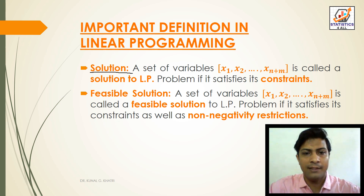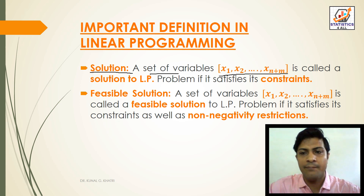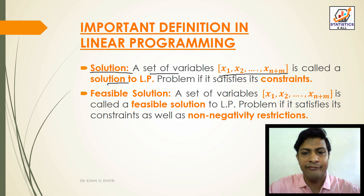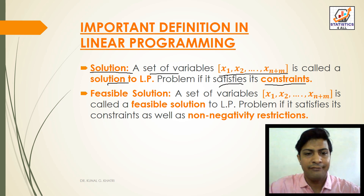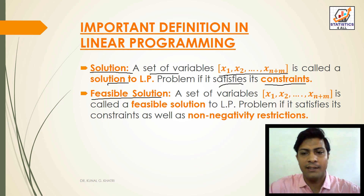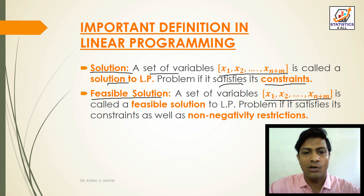Now, some important definitions in linear programming. A solution is a set of variables x1, x2, x3, up to xn+m that is called a solution to a linear programming problem if it satisfies its constraints.